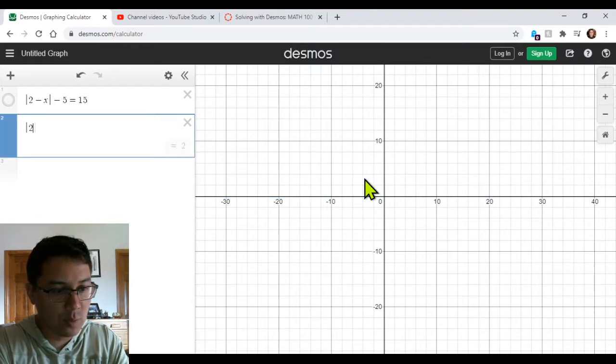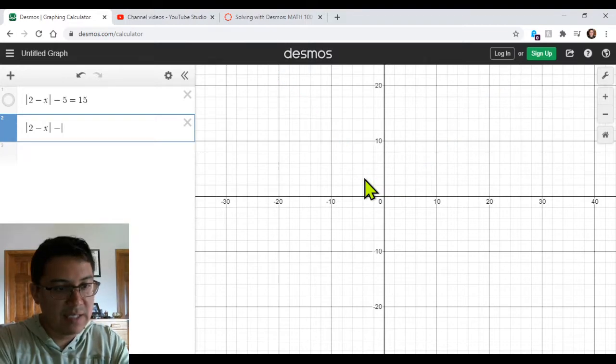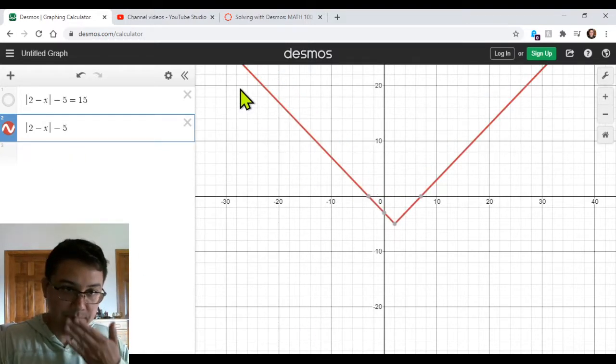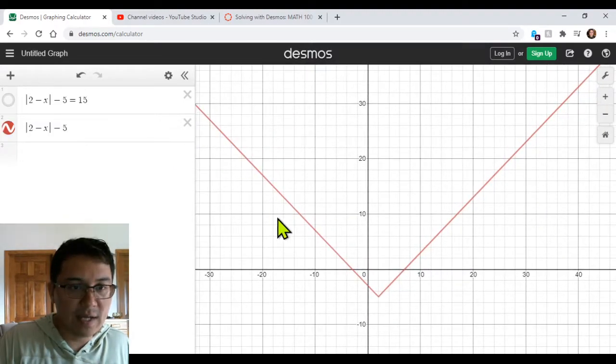So the first thing we're going to do is put down absolute value of 2 minus x minus 5 and generate a graph of just the absolute value part of it. So what we end up with here is this red V shape.